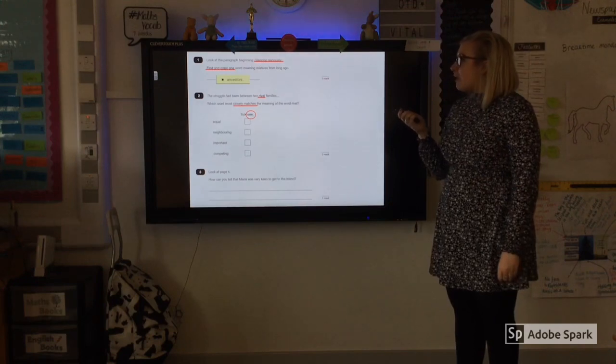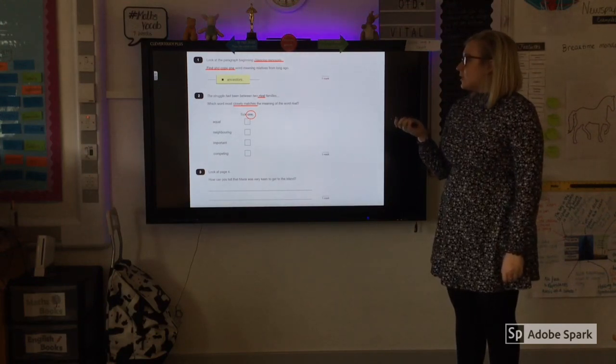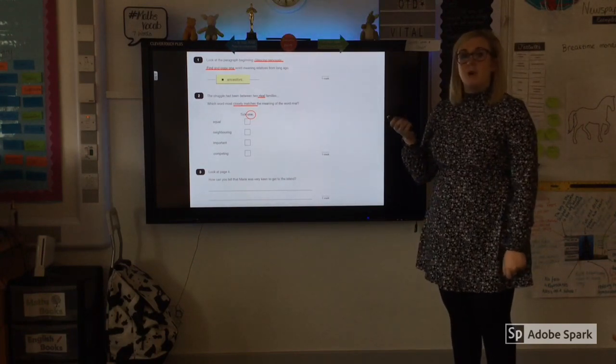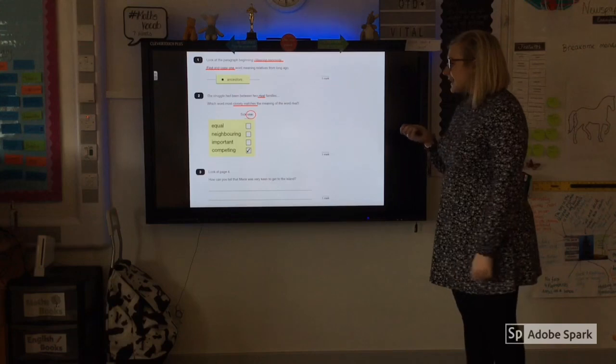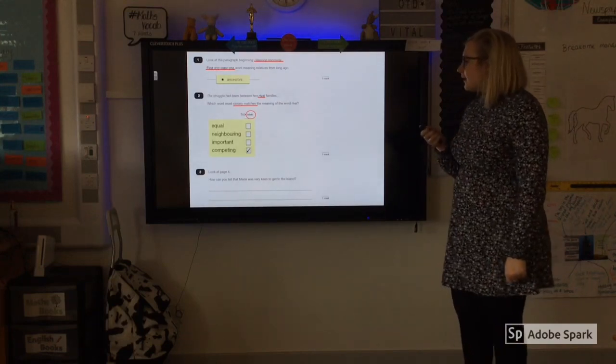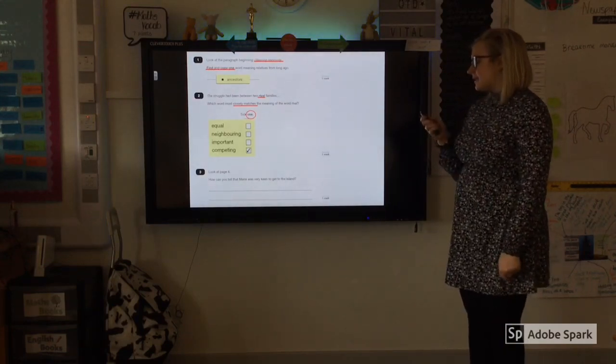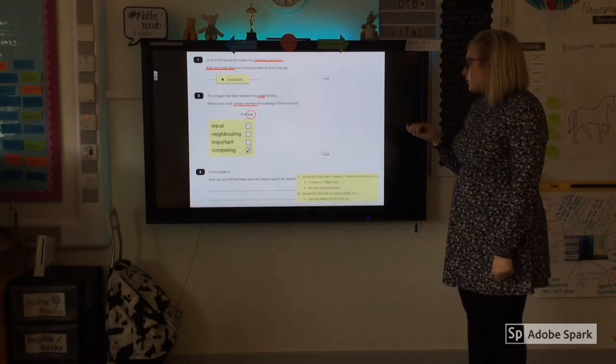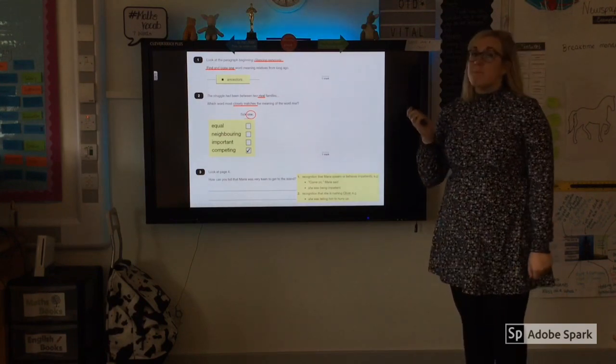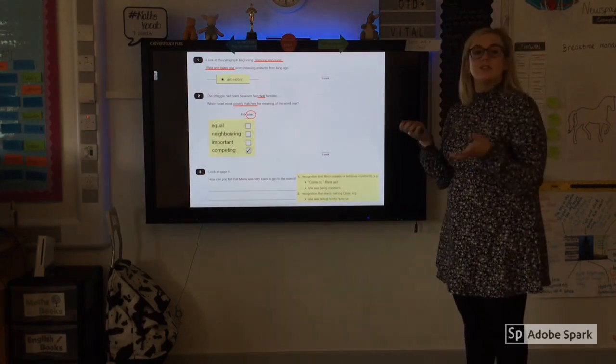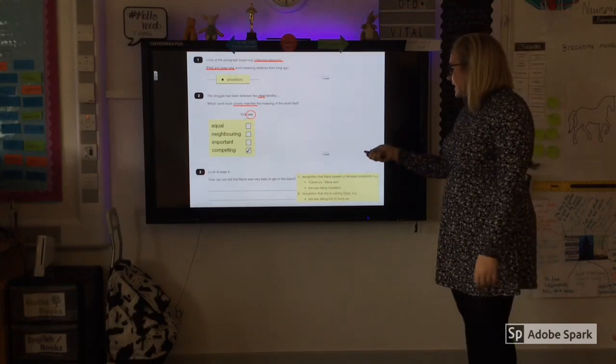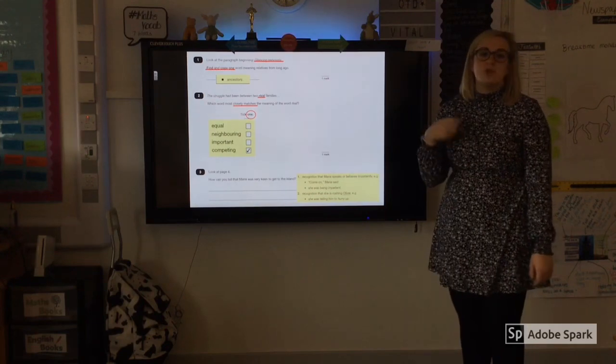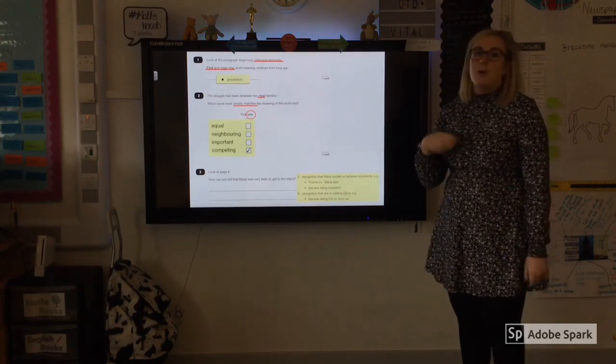The next question then, so rival. Which one of these words is the closest meaning to the word rival? So if you are rivaling against somebody, you are competing. And then the last question was, how can you tell that Maria was keen to get to the island? So the key word there is keen. So words that show that she is keen would be that she behaves impatiently. Now if you are impatient, you are keen to do something. And that's the recognition that she is rushing Oliver. So if you are rushing someone, you are telling them to hurry up. Another meaning, impatient or being keen.